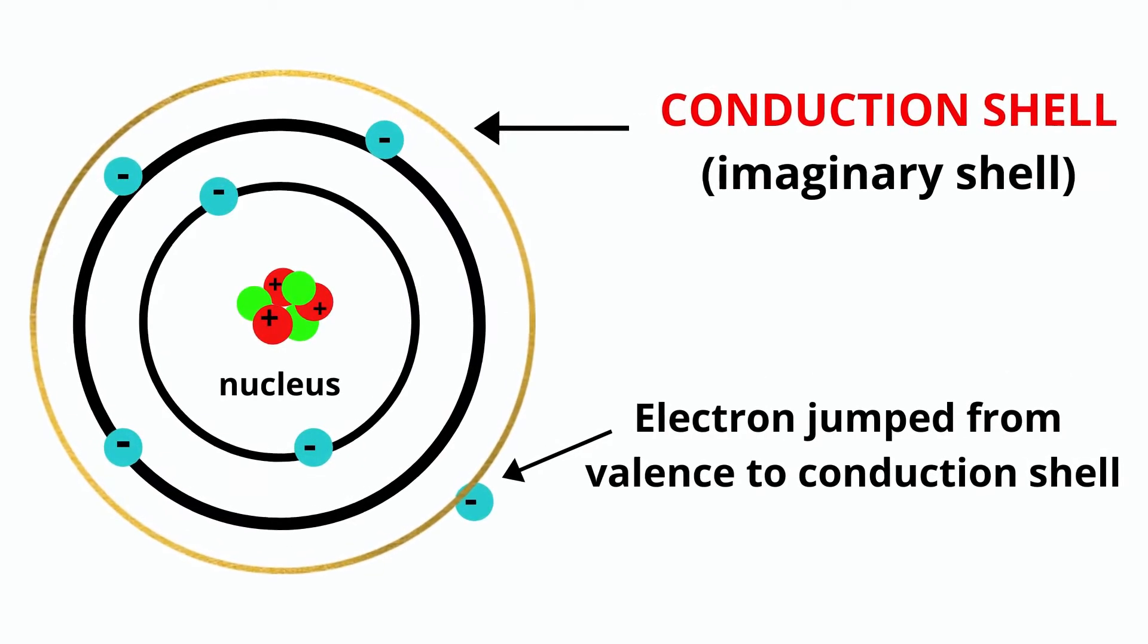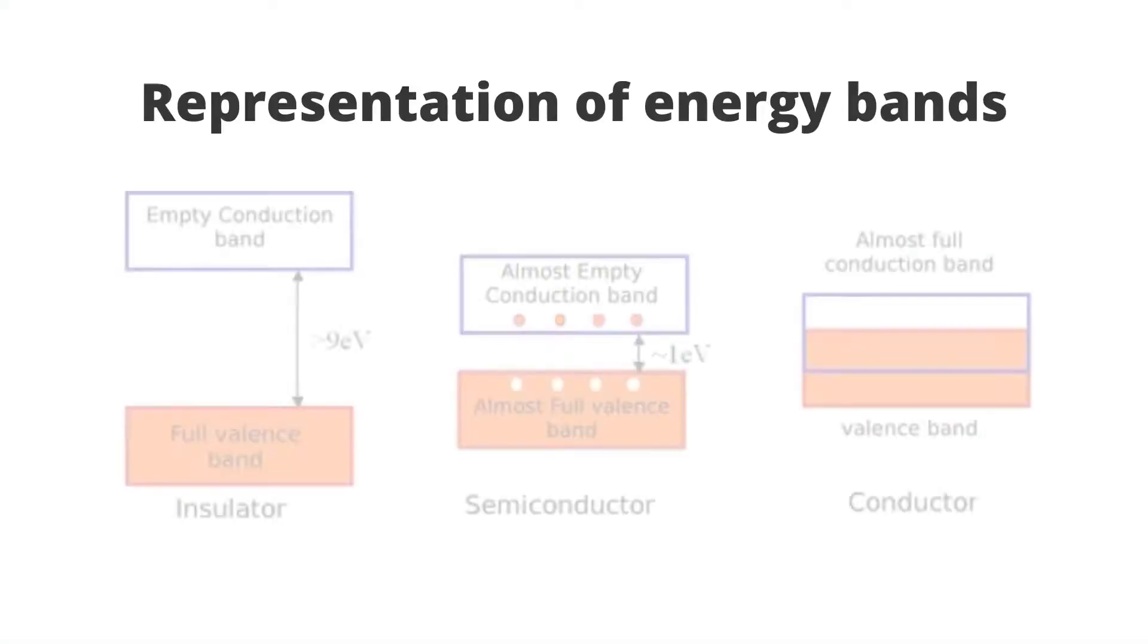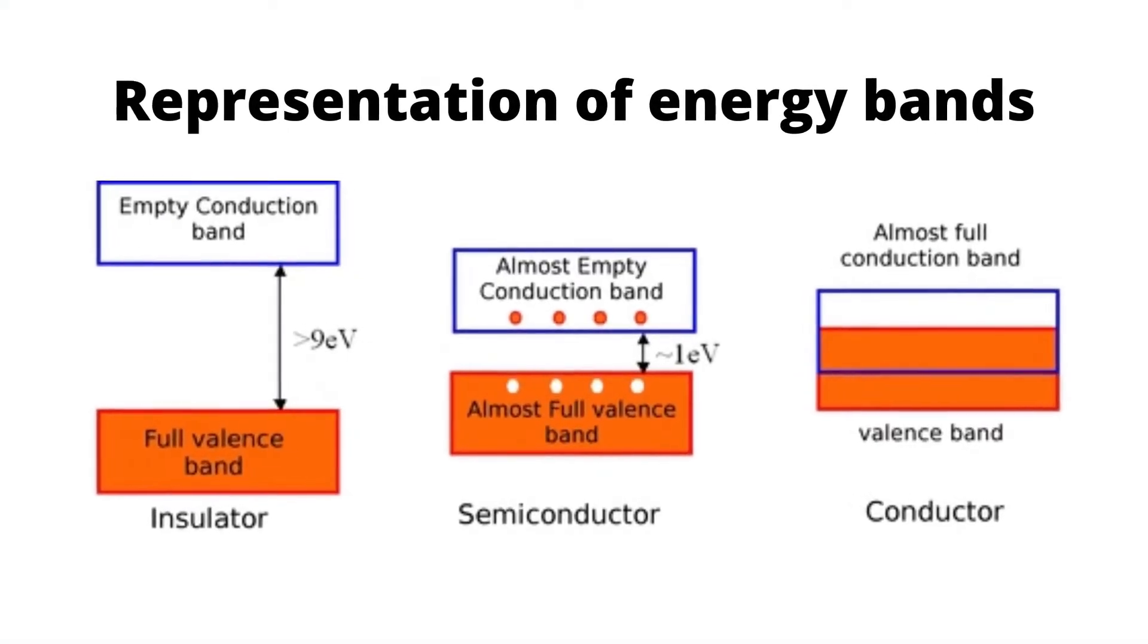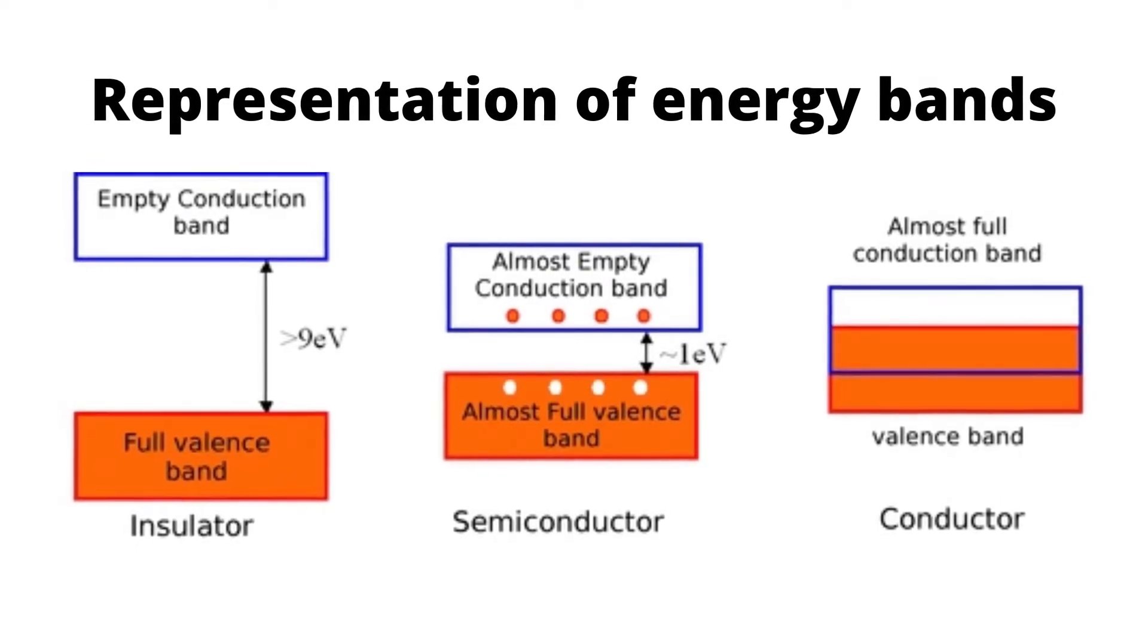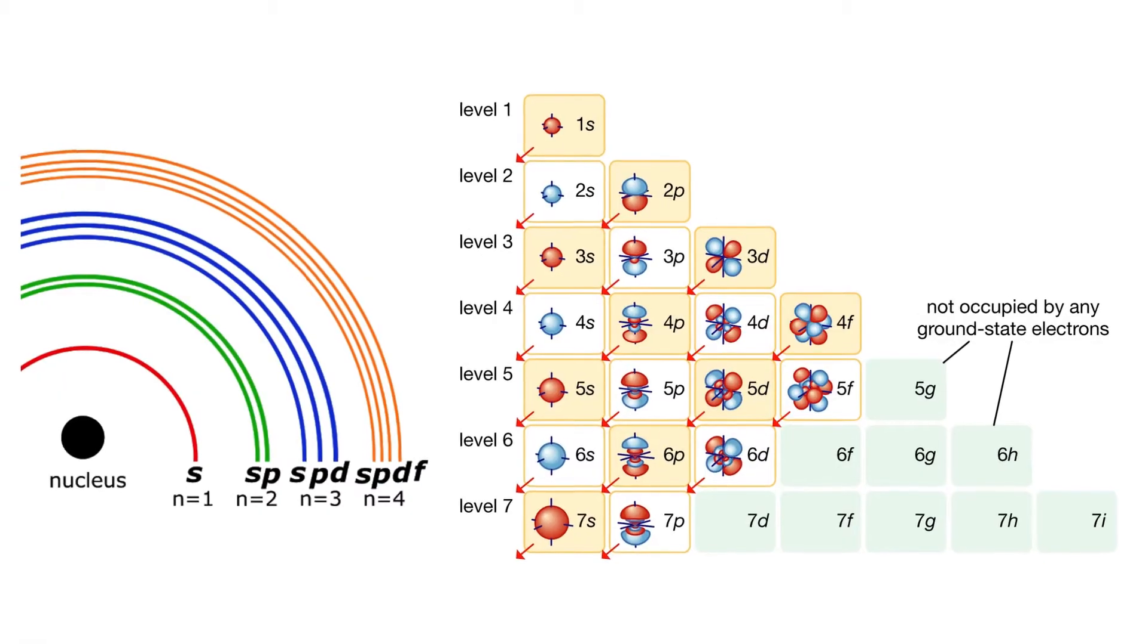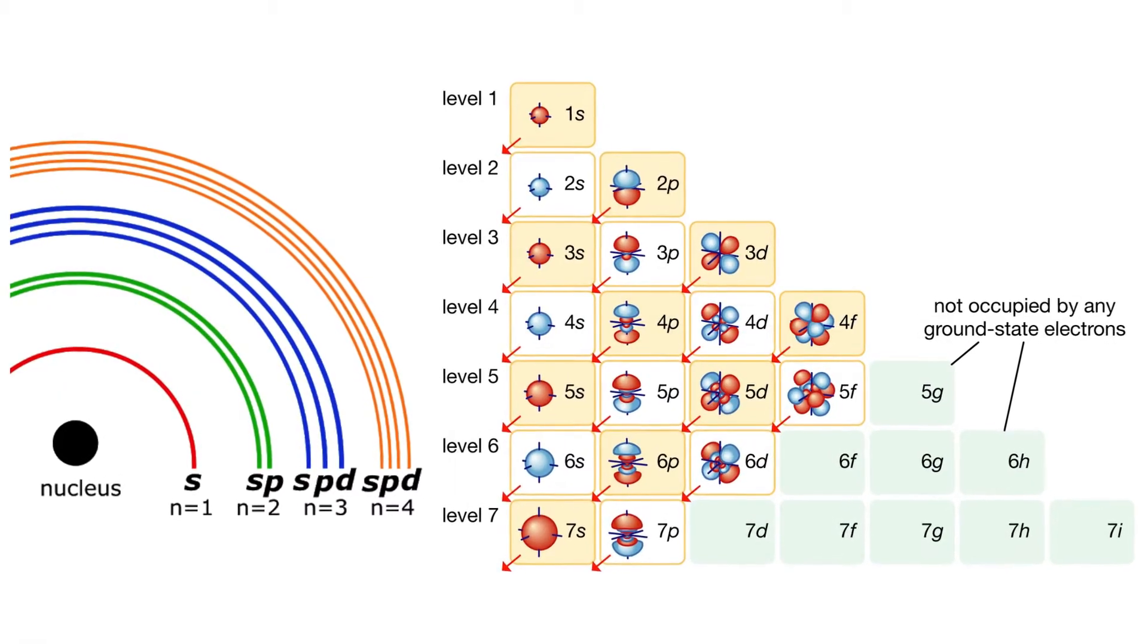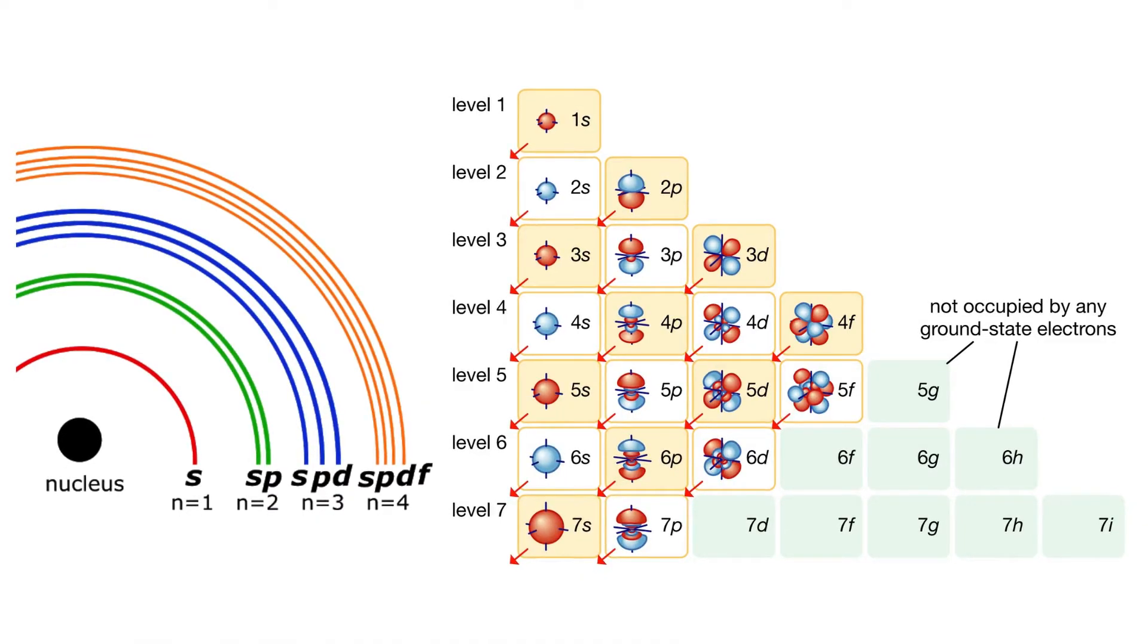When an atom is given energy in any form, electrons from this valence shell jump to an imaginary level of higher energy called the conduction shell. Depending on how many electrons can enter this conduction band, a material may be classified as a conductor, a semiconductor, or an insulator in decreasing order of electronic activity. When we talk about a single atom, these various electron orbits and the valence and conduction levels can be thought of as different energy levels, with the innermost electron orbit having the highest stability and thus being lowest on the scale, and the conduction level having the lowest stability and being highest on the scale.